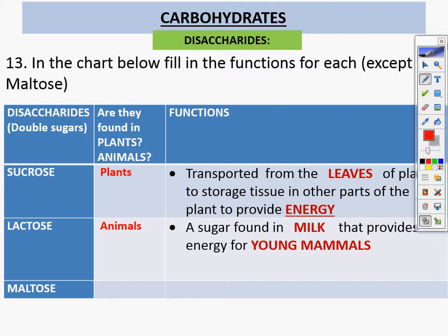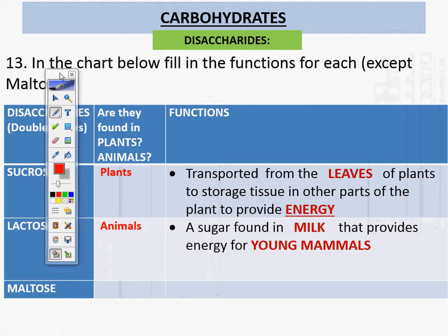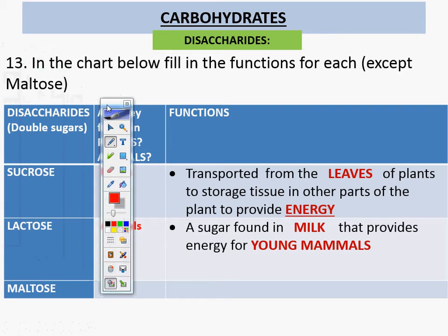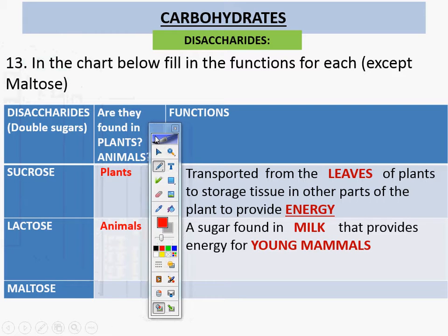So sucrose and lactose — animals and plants. Sucrose is transported from the leaves of plants to storage tissue to provide energy. Lactose is the sugar found in milk that provides energy for young mammals.